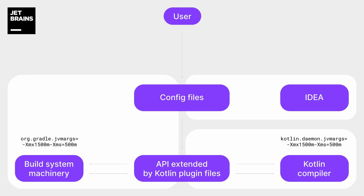During a build phase, the build system and compiler talk to each other using this kind of plugin. Sometimes this type of integration is not enough for the user who wants to tune the build process. For that, the build system has config files. Content in these files is used to configure the Kotlin compiler, build system setup, and the project model in general. Here is an example of how a user can configure the amount of memory for Gradle and Kotlin daemon.